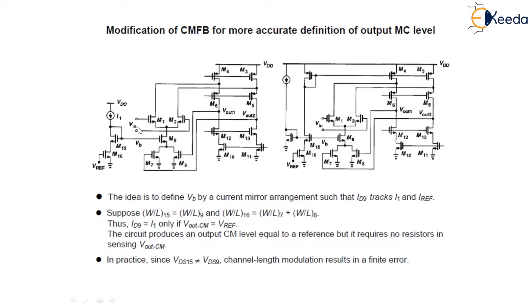Let's suppose that W by L15 is equal to W by L9 and W by L16 is equal to W by L1 plus W by L8. Thus, ID9 is equal to I1 only if Vout CM is equal to V reference.